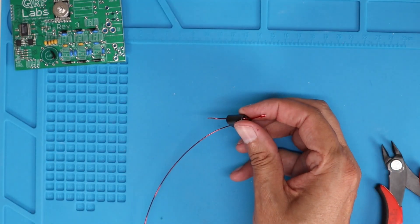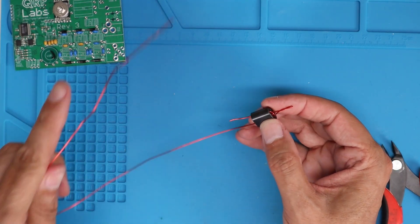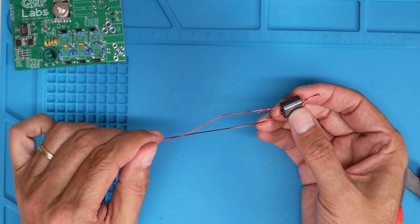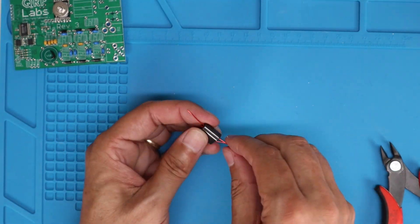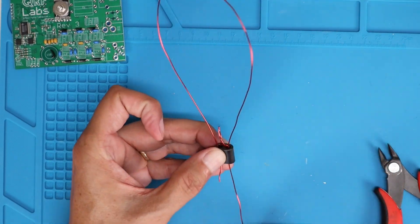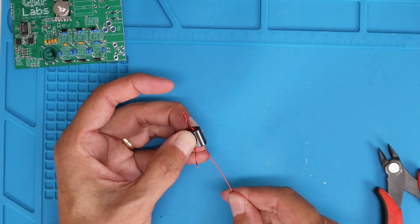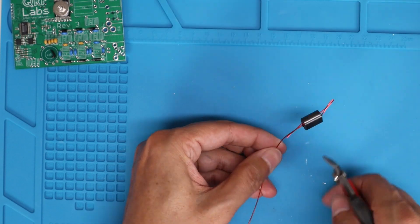And then we're going to do one last turn. So, one pass through, and then another pass through the other one. And that will make our three turns of our primary winding. So, this completes our primary winding. We'll go ahead and cut that off.